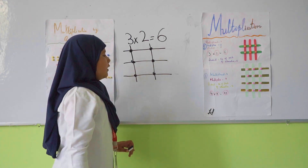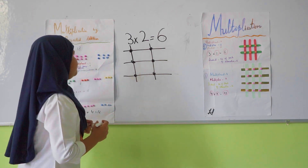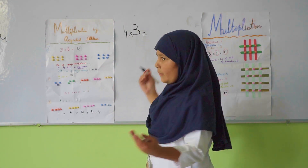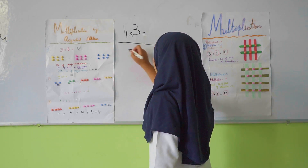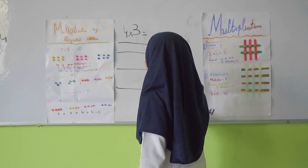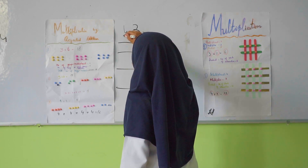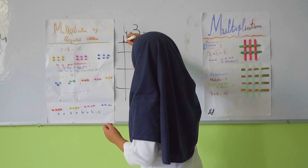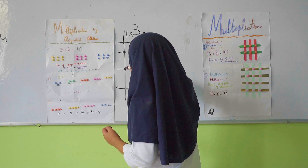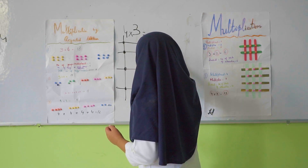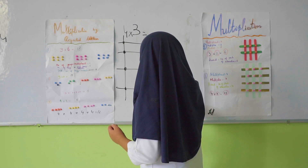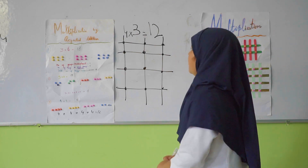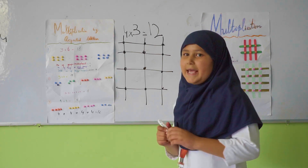Now another question: 4 multiply by 3. So first we will draw 4 horizontal lines and then we will draw 3 vertical lines. Now we will count the points of intersection: 1, 2, 3, 4, 5, 6, 7, 8, 9, 10, 11 and 12. Now we will do multiplication by the lattice method.